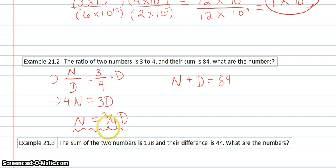Now, I'm going to use this n equals 3/4d and replace my n with that. So I'll have 3/4d plus d, and there's that understood 1 in front of the d, equals 84. So that's 1 and 3/4d equals 84.